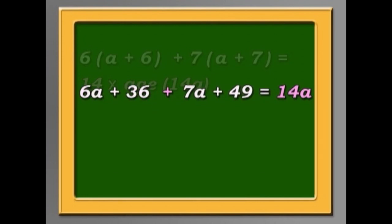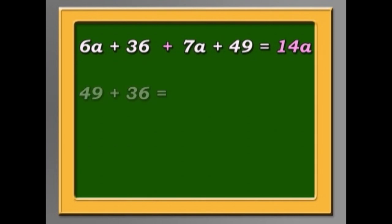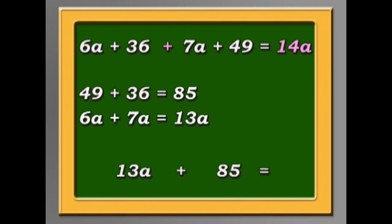Let's work out the equation. 49 and 36, that makes 85. 6A plus 7A, that makes 13A. So 13A plus 85 equals 14A.